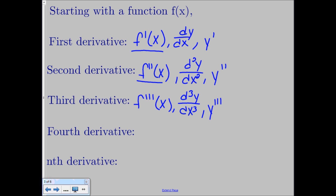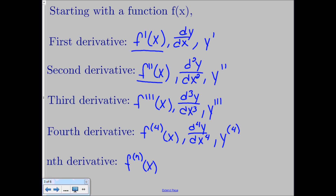We could keep going and take the fourth derivative. But when we get to the fourth derivative or higher, we don't just write a bunch of prime symbols because that takes up a lot of room. We put in parentheses the power of the derivative, so f with parentheses four is the fourth derivative, or d⁴y over dx to the fourth. This generalizes to the nth derivative written as f with n in parentheses of x, or dⁿy over dxⁿ.